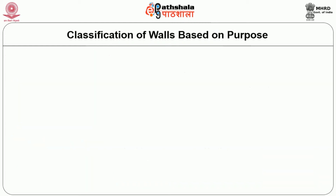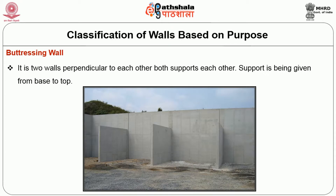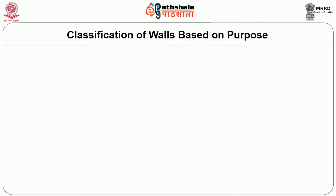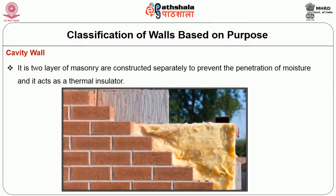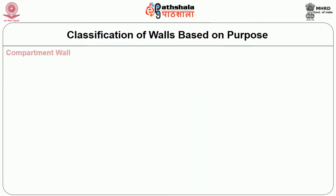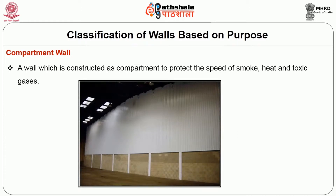Next, we will see classification of walls based on purpose. A buttering wall consists of two walls perpendicular to each other, both supporting each other from base to top. A cavity wall is two layers of masonry constructed separately to prevent the penetration of moisture and to act as a thermal insulator. A compartment wall is a wall constructed to protect against the spread of smoke, heat and toxic gases.